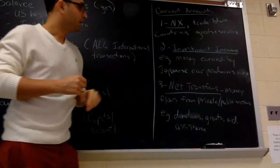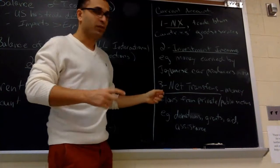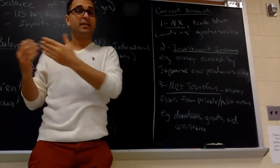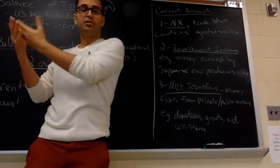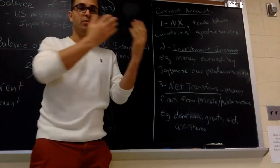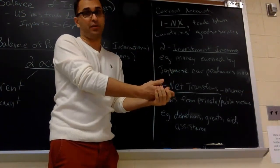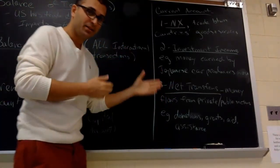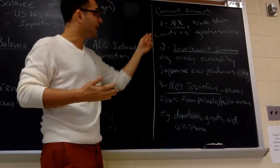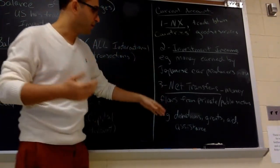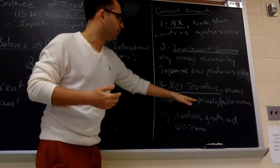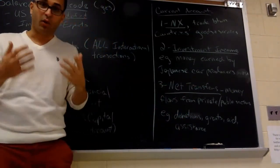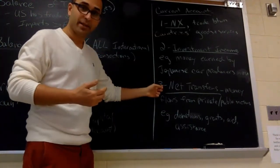The third part is called a net transfer, similar to a transfer payment. If you recall, something like Social Security — money is transferred when nothing is produced. Similarly here, it's money that's transferred when nothing is produced. What are those money transfers? Money flows from private or public sectors: donations, grants, aid, and assistance are all considered net transfers. These are in the current account.